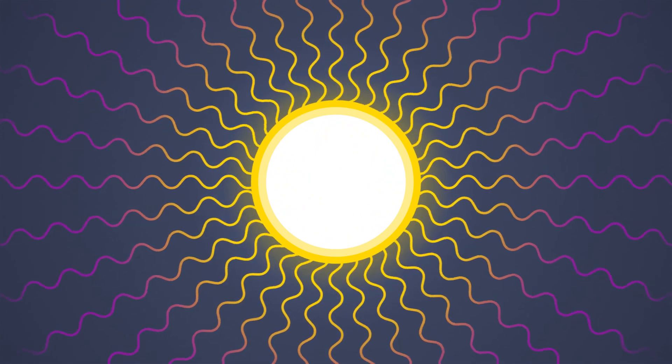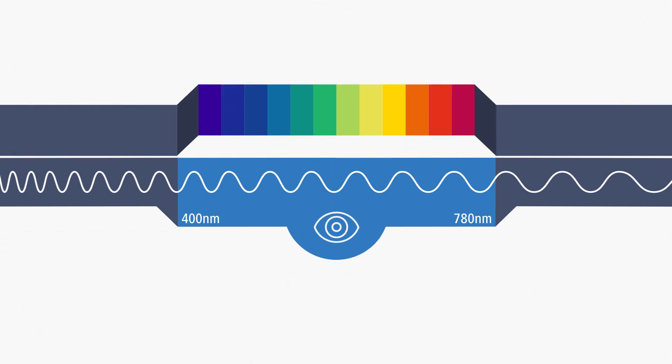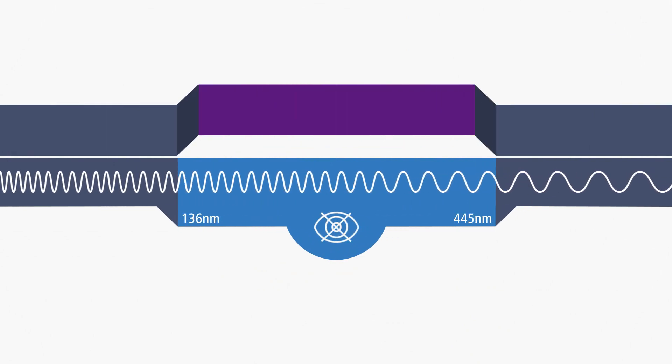The rays of the sun are electromagnetic waves. Depending on their wavelength, the light appears in different colors. But there are also invisible components, like ultraviolet light, or more precisely, UV radiation.